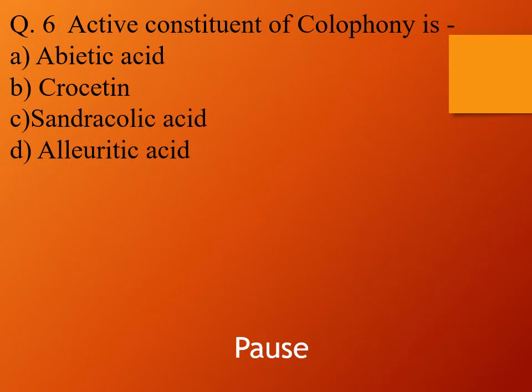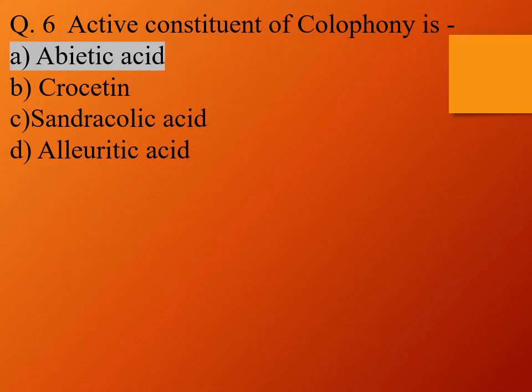Question 6. Active constituent of colophony is: option A, abietic acid; option B, crocetine; option C, sandracolic acid; and option D, alieuretic acid. The right answer is option A, abietic acid.